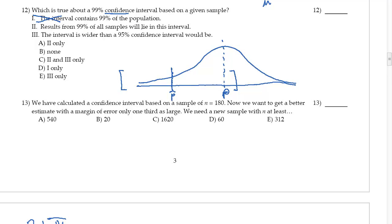Results from 99% of all samples will lie in this interval. Well, I'm going to have lots and lots of samples over here that are not going to be in the confidence interval, because the confidence interval is only confident about containing P. So this one's not going to be true. And the interval is wider than the 95% confidence interval would be. And this is totally true. This is definitely going to be true, because 95% confidence means I'm going to shrink it down and have a smaller interval. That's why I have less confidence. It's a smaller interval because I have less confidence that P is actually going to be inside it. So that means that 3 is the only one that makes me happy, and so that's E.